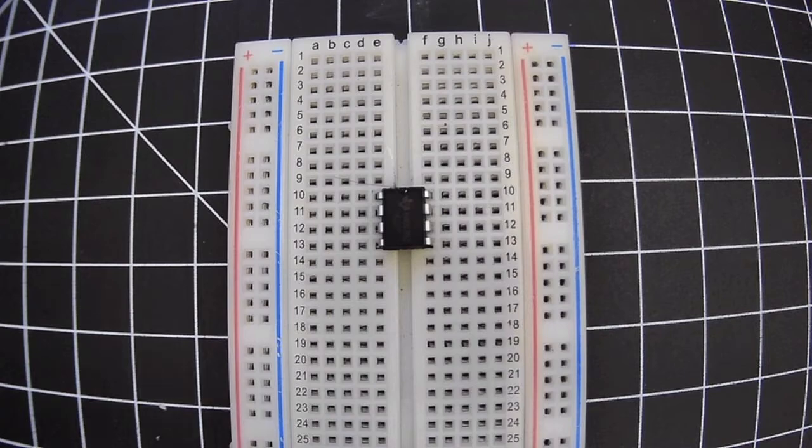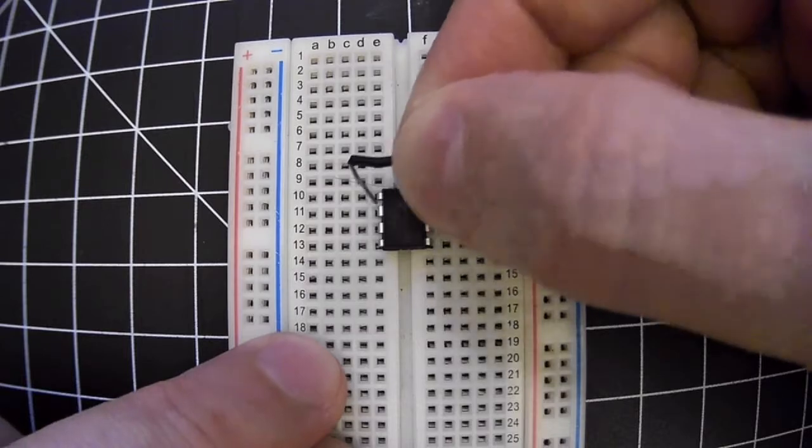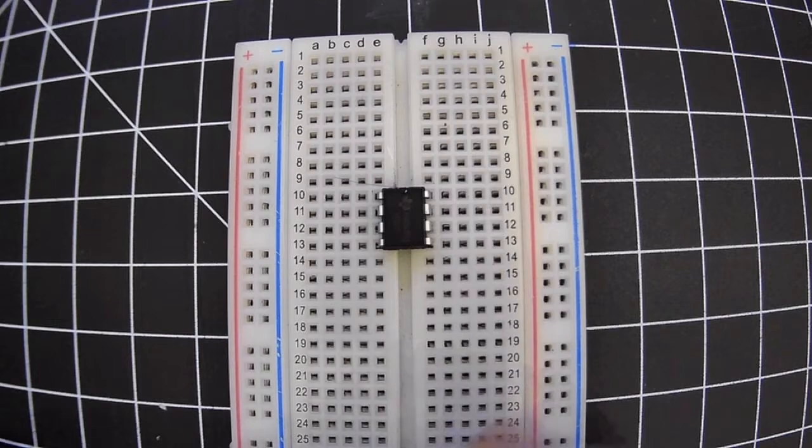The first thing to do is to identify the pins on the chip. So the handy thing about ICs is that they're always numbered in the same way, and all you have to do is identify pin 1 and you know what all the other pins are.